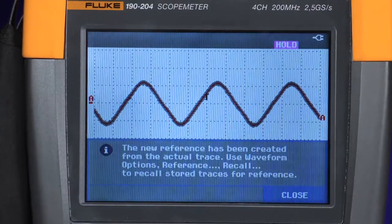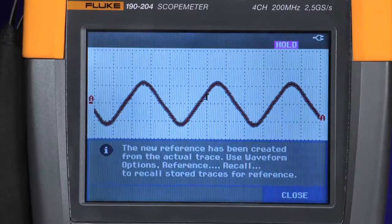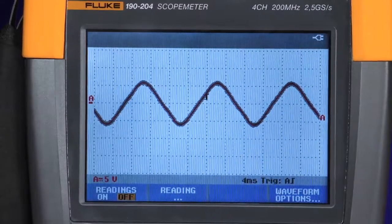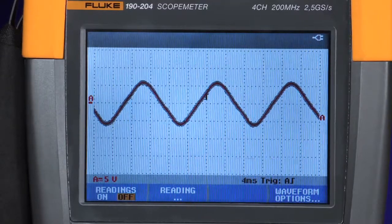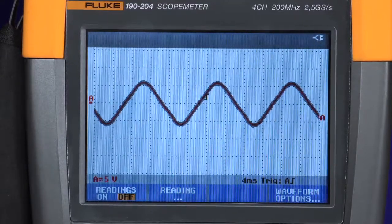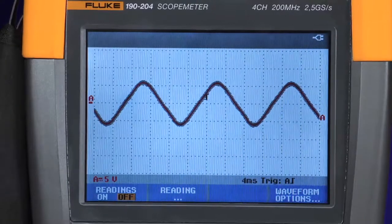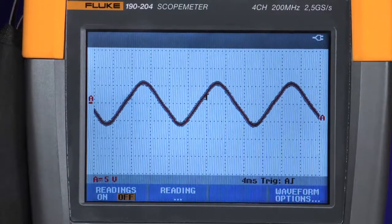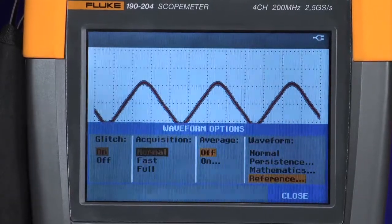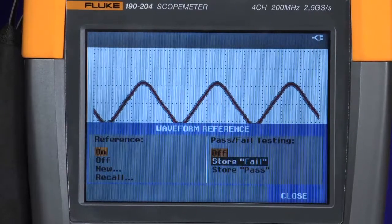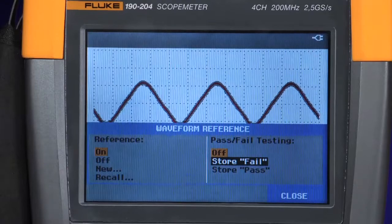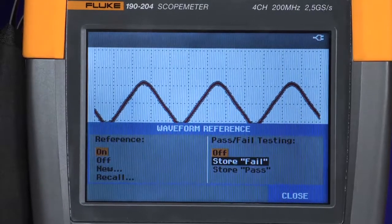The next step in setting up the pass-fail test mode is to set up the oscilloscope to decide what it should capture, whether to store a waveform within the envelope in the pass mode or store the waveform when it exceeds that envelope. Press the waveform option menu, select reference and then choose either store on fail when the unknown trace exceeds the envelope, or store on pass when it remains within the envelope.